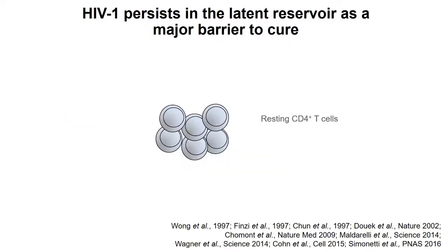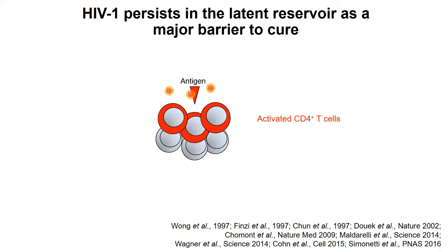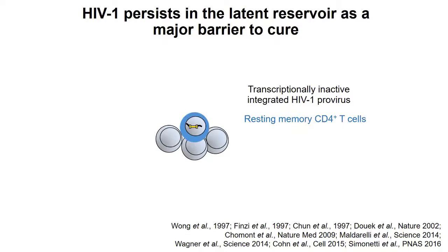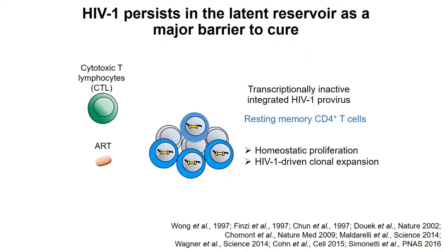This is because HIV resides in the latent reservoir. CD4 T cells become activated when antigen comes in. HIV preferentially infects these activated CD4 T cells and integrates into a chromosome. Once the antigen is gone, these CD4 T cells go back to a memory resting state, and HIV living inside them goes into this resting state as well. They do not express any viral proteins to be recognized, so cytotoxic T lymphocytes or ART cannot do anything to these cells.